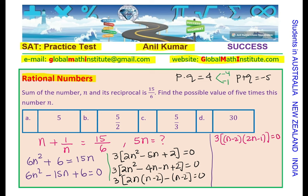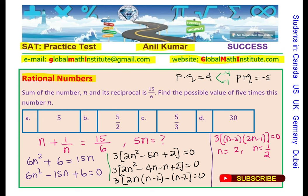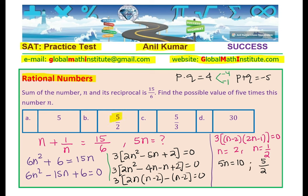That gives the value of n equals 2 or n equals one half. These two values are reciprocals of one another, which makes sense. Now, the answer required is 5 times n: so 5 times n is either 10 or 5 over 2. Amongst the options given, we have 5 over 2, and therefore option B is the right answer.